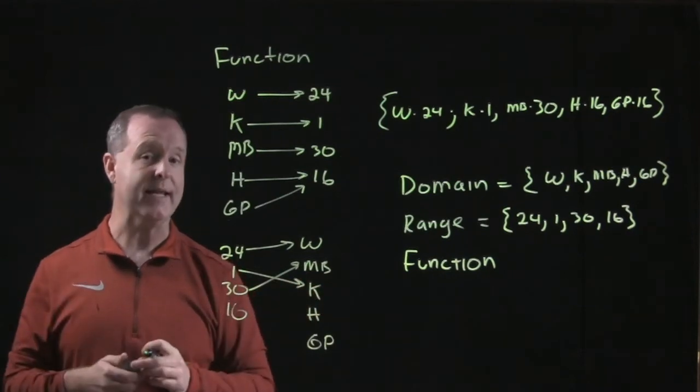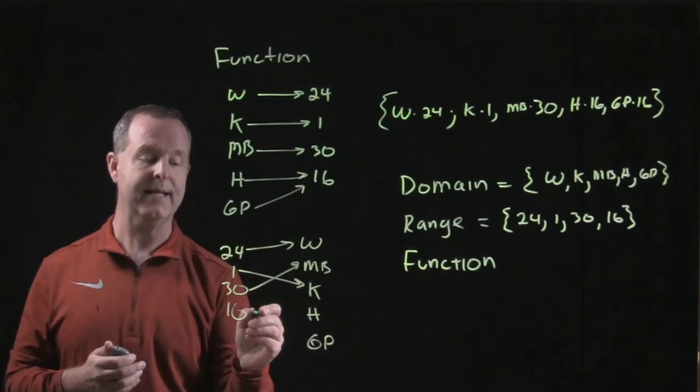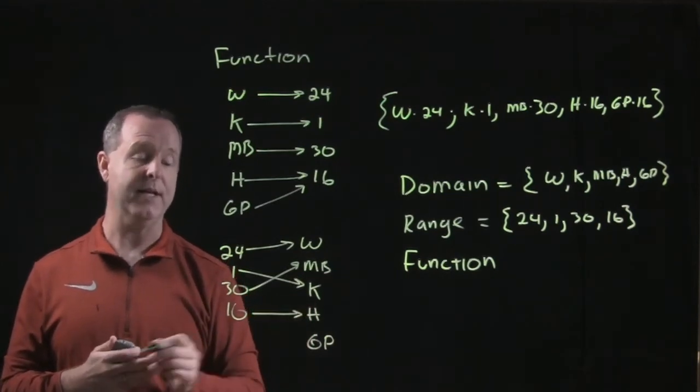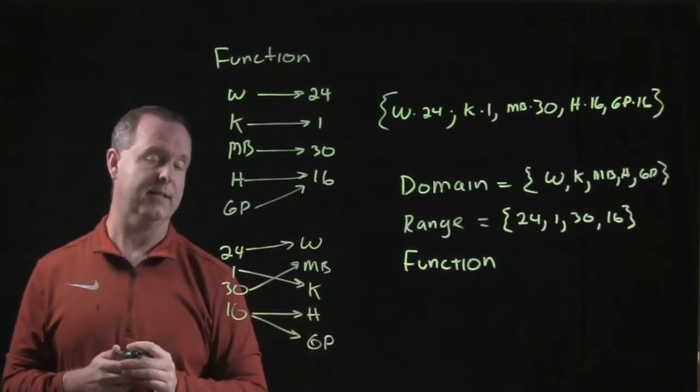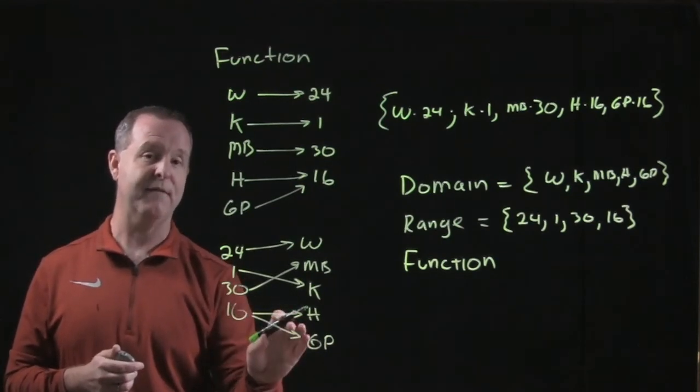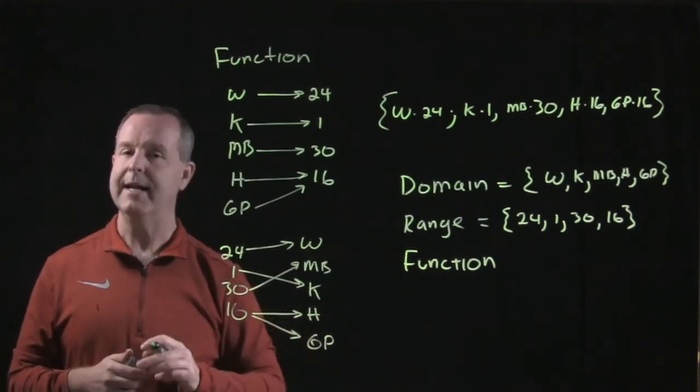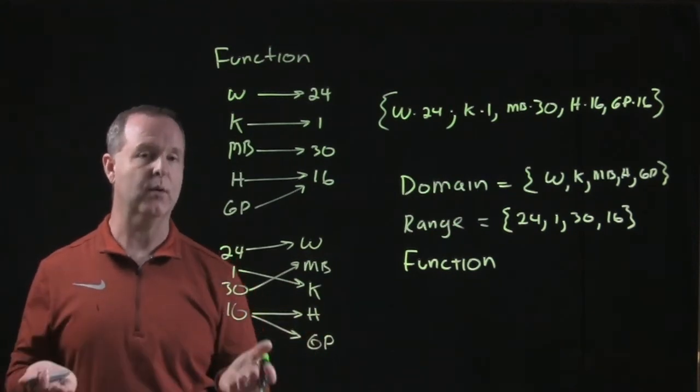So far, I have everything making a function. However, here's where it breaks down. 16 matches up with H and also matches up with Grandpa. Because 16 cannot be identified with a unique value, the relationship set up this way is not a function. It's only a relationship.